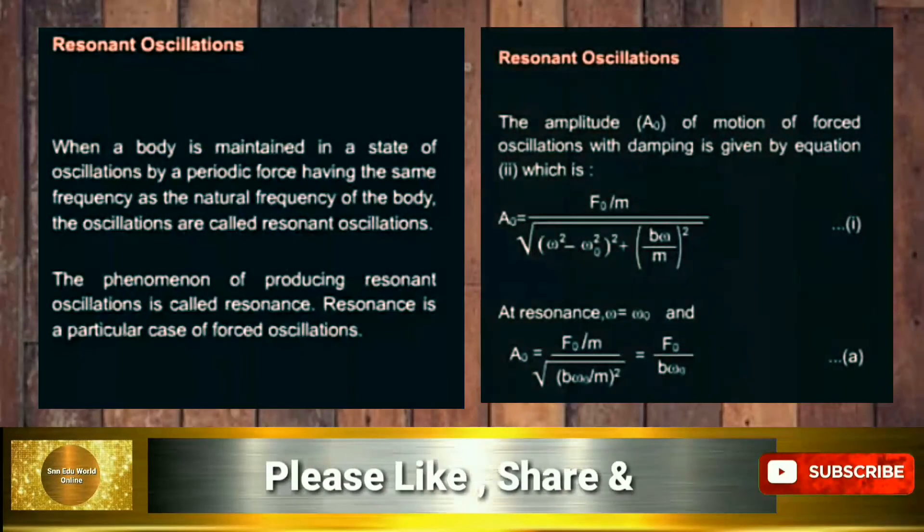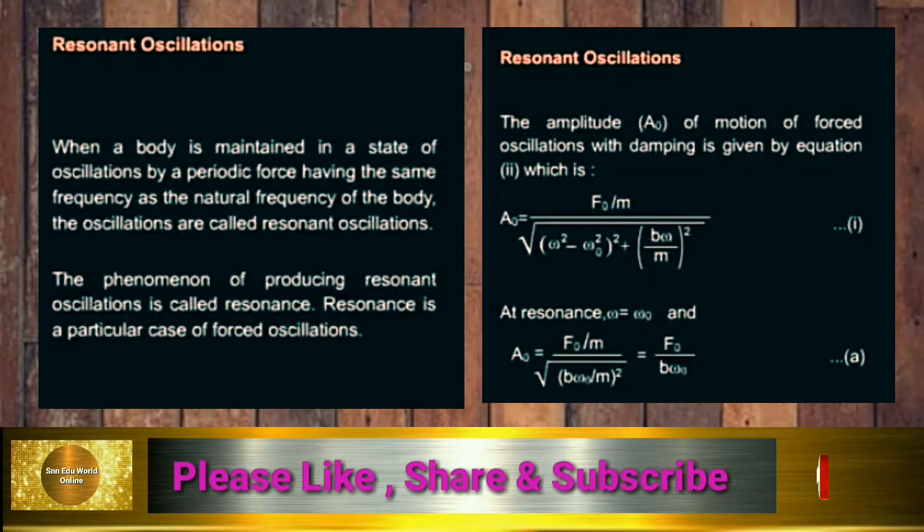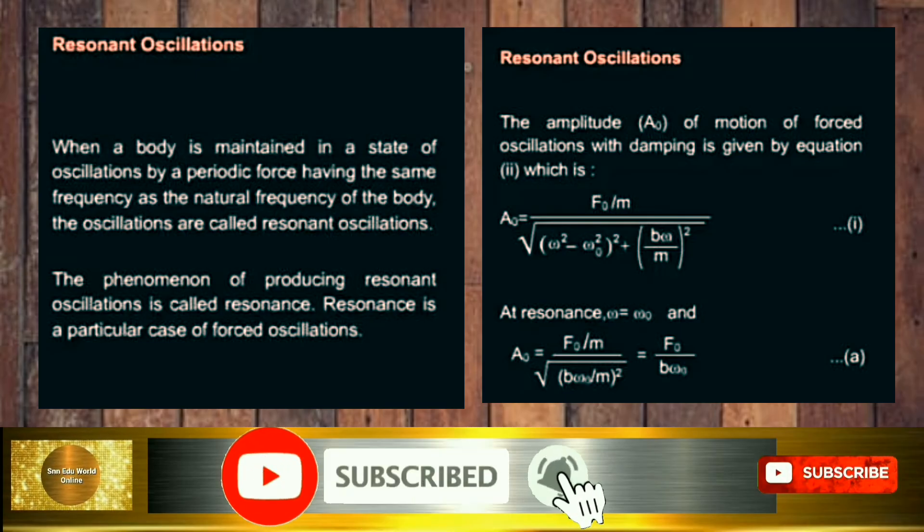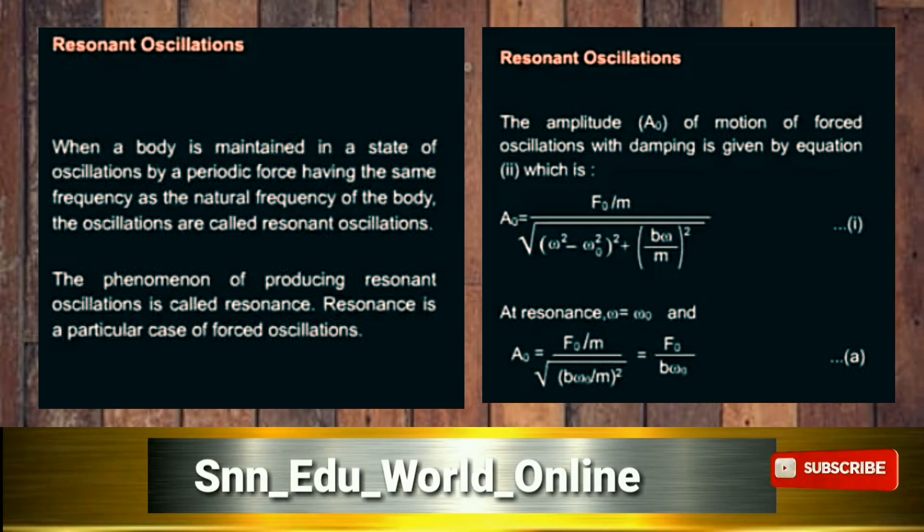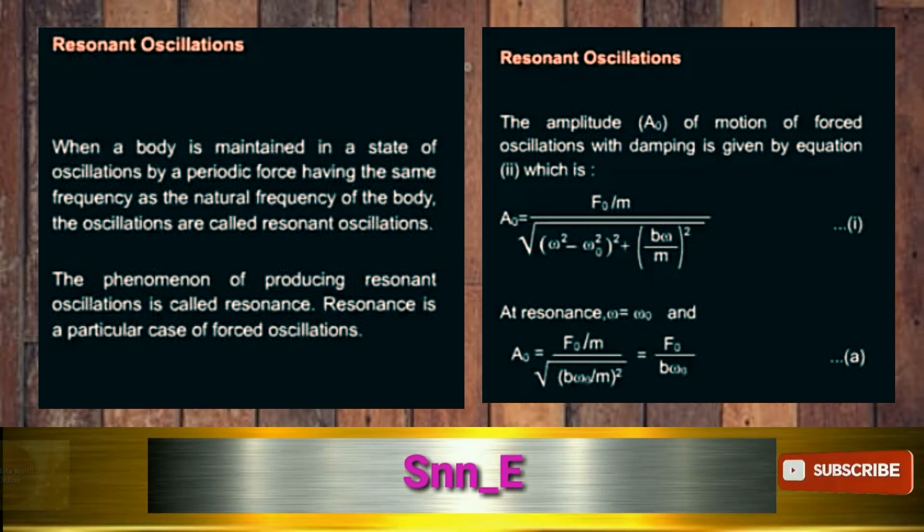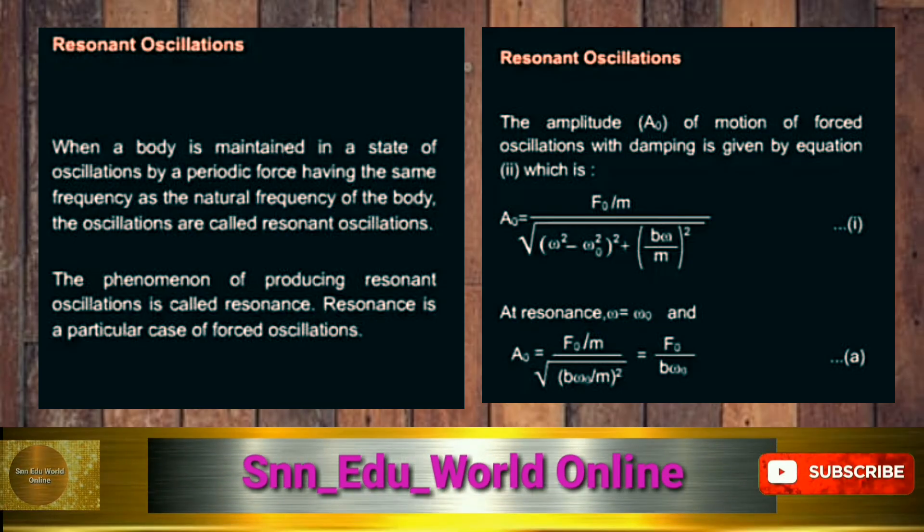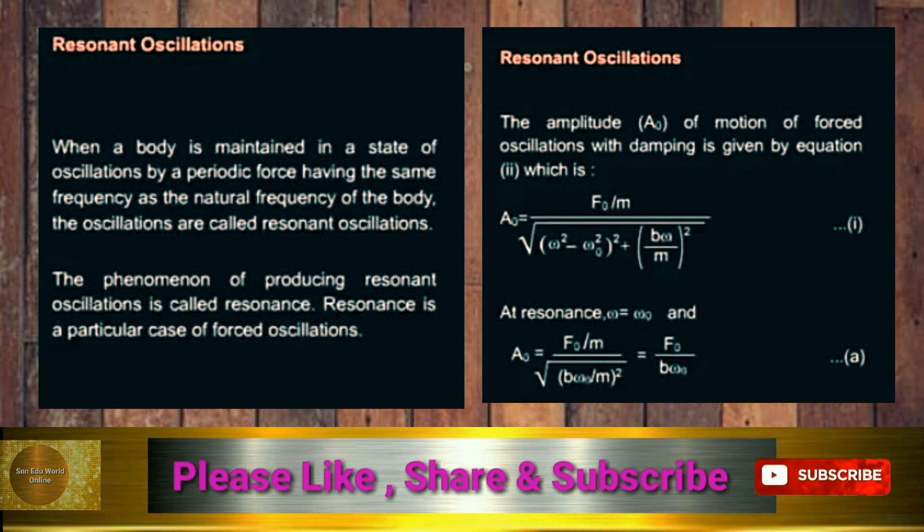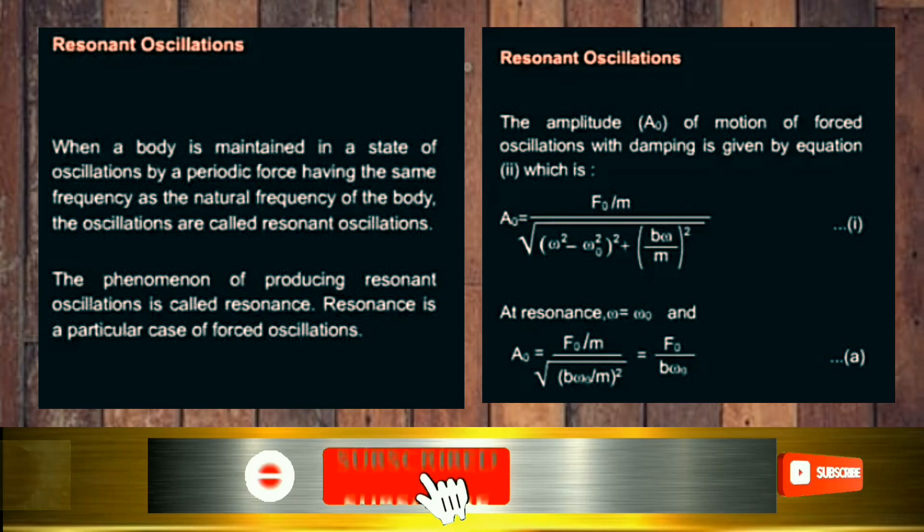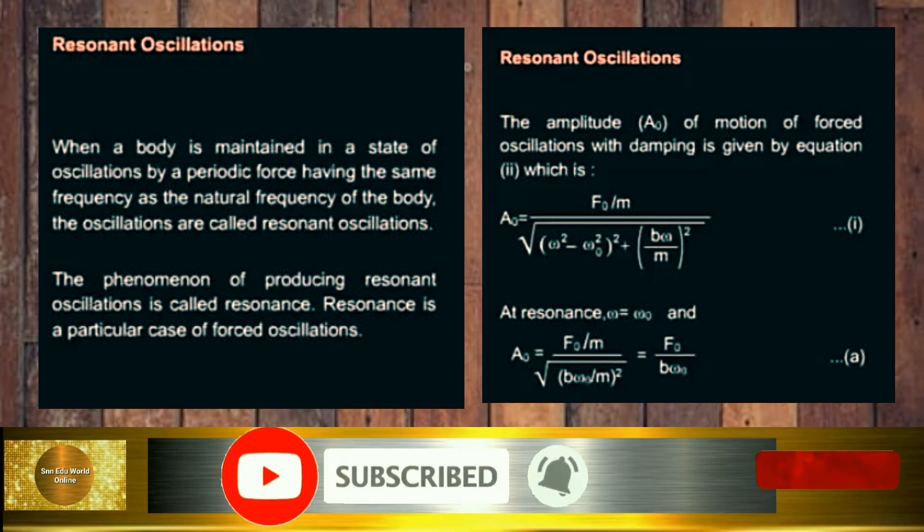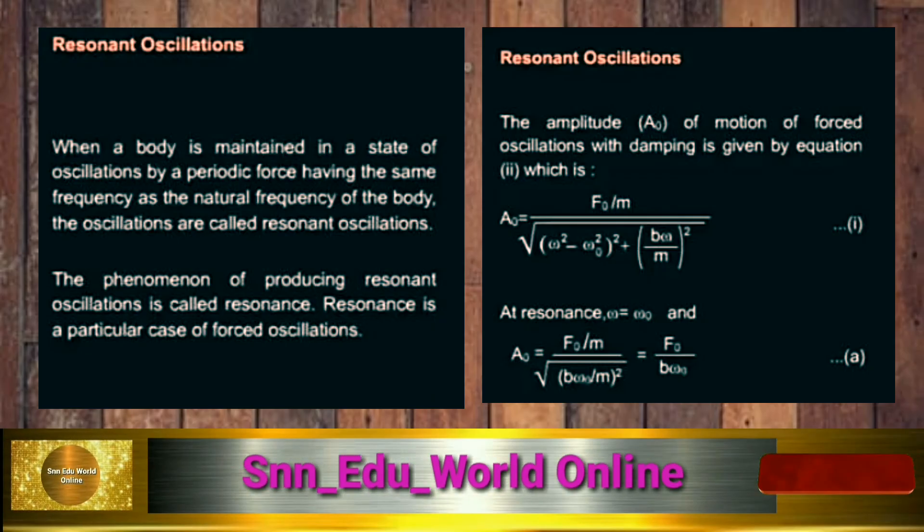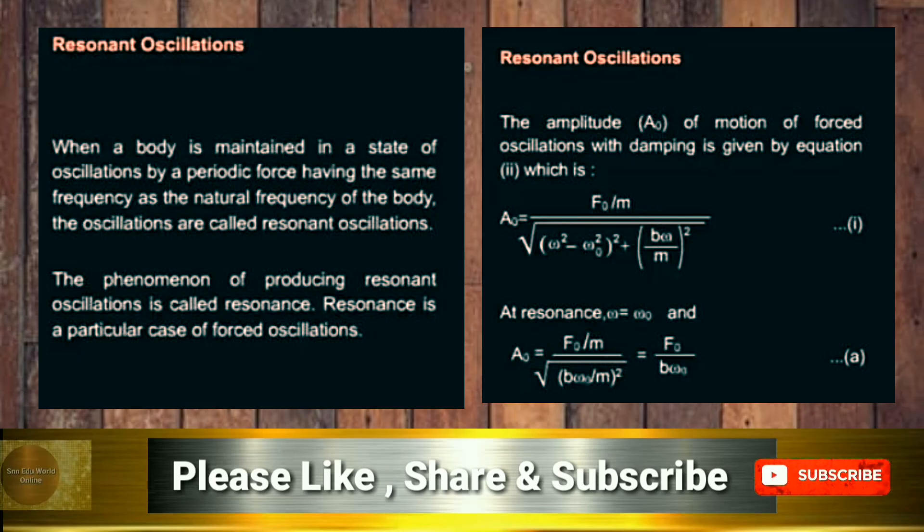Now there arises a special case of forced oscillation: resonance or resonant oscillations. When a body is maintained in a state of oscillations by periodic force having the same frequency as the natural frequency of the body, the oscillations are called resonant oscillations. It is a special case of forced oscillation in which the natural frequency of the body is exactly the same as the forced frequency. The phenomenon of producing resonant oscillations is called resonance.